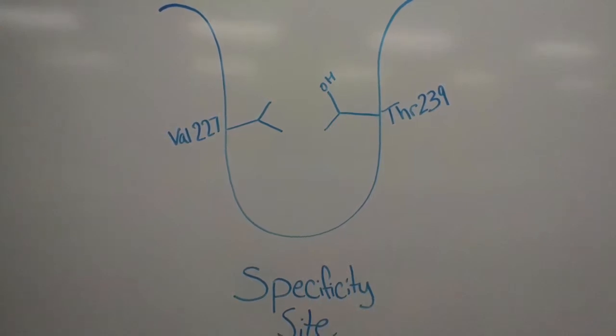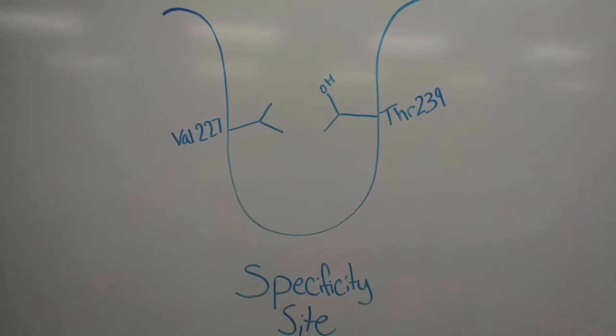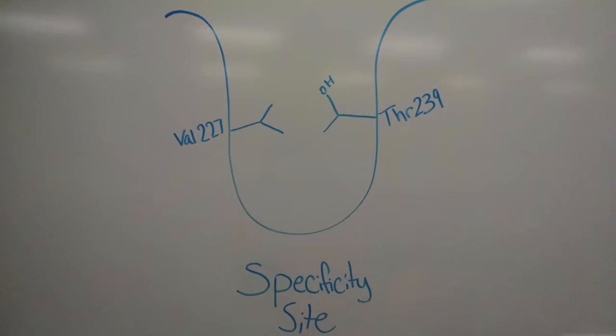Mutations where valine-227 or threonine-239 are absent will ruin the integrity and function of the site. There are several skin disorders linked to this mutation, such as psoriasis and eczema.